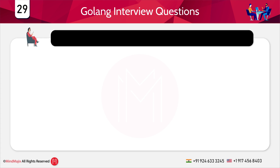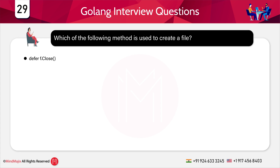Which of the following method is used to create a file? Options: a) defer f.Close(), b) os.Create, c) os.OpenFile, d) all of the above. The answer is b) os.Create. With os.Create you can create a file, and you need to import the os package to use this method.